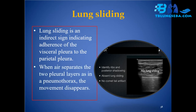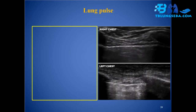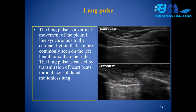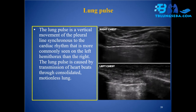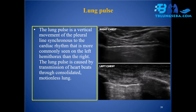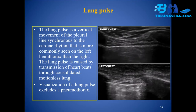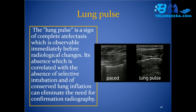Lung pulse: the lung pulse is a vertical movement of the pleural line synchronous to the cardiac rhythm, more commonly seen on the left hemithorax than the right. It is caused by transmission of heartbeats through consolidated, motionless lung. Visualization of a lung pulse excludes pneumothorax. The lung pulse is a sign of complete atelectasis, observable immediately before radiological changes. Its absence, correlated with absence of selective intubation and conserved lung inflation, can eliminate the need for confirmation radiography.